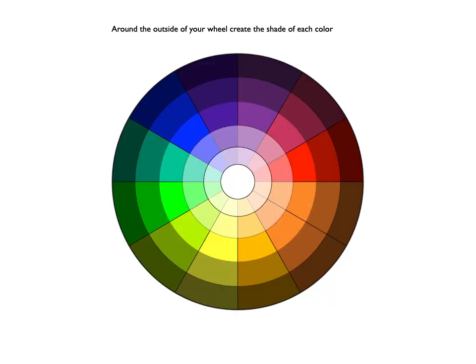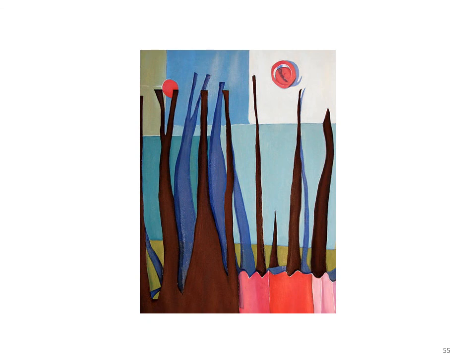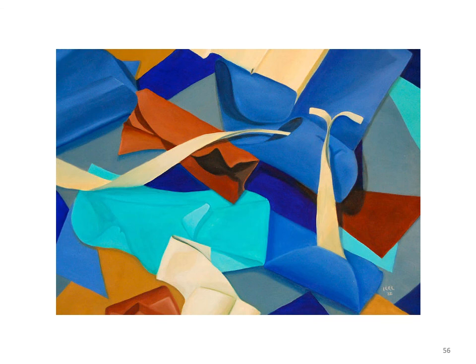Around the outside of the wheel, you're going to create a shade of each color — each hue plus black. You're also going to create an intensity chart: yellow to purple, red and green, blue and orange, mixing to the middle brown. Here are some finished student project examples. You're going to pick a variety of colors for your project and create three-dimensional color still lifes using colored paper or fabric found around your house. Watch the next video for more details — you'll make the still life and then create a painting based on it.